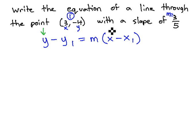Remember that generic y and generic x stay in the formula. So, we get y minus y1, which is negative 4, equals m, which is 3 fifths, times x minus 3.